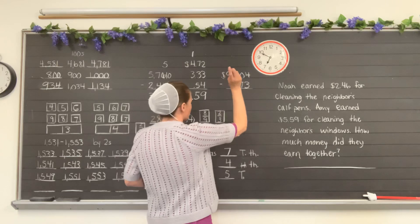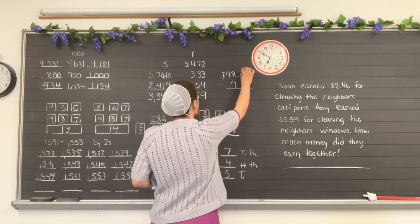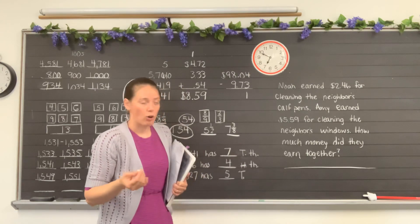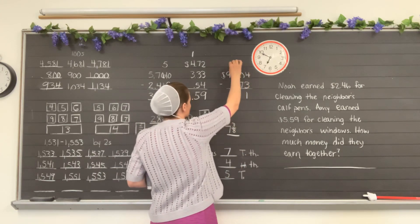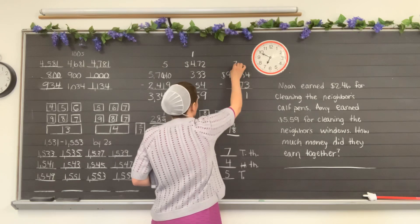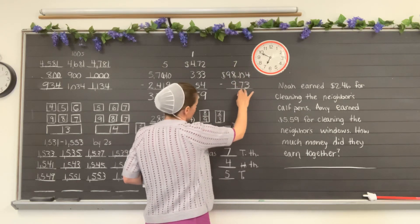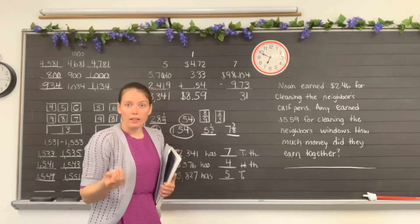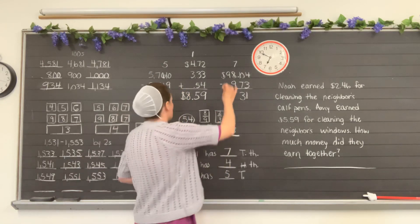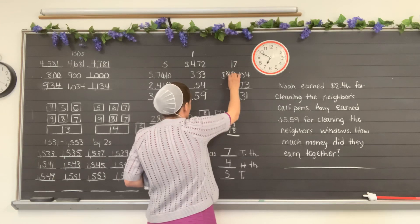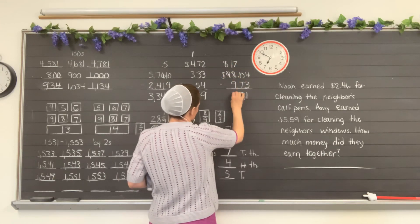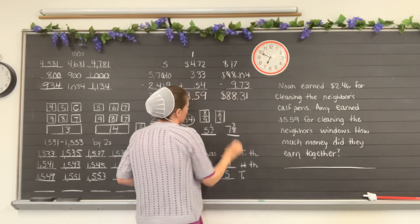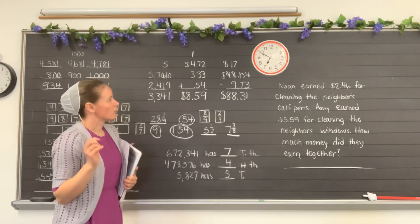Here we have a subtraction problem. So 4 minus 3 is 1. 0 minus 7, 0 is less than 7 so we'll need to borrow on that again. Put a 1 beside the 0, cross out the 8, put a 7 on top. 10 minus 7 is 3. 7 minus 9, 7 is less than 9 so we'll need to borrow again. So 1 beside the 7, cross out the 9, put an 8 on top. 17 minus 9 is 8. 8 minus 1 is 8. Dollar sign, decimal point, and that would be your answer.